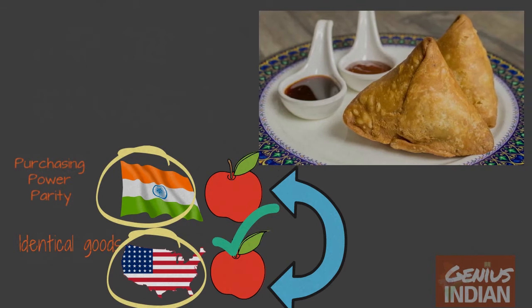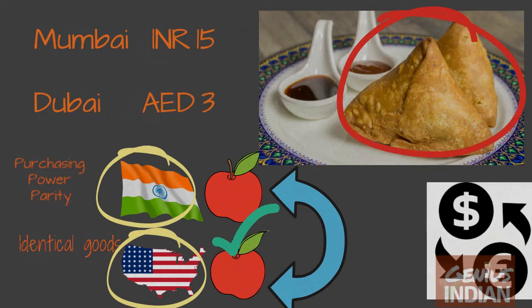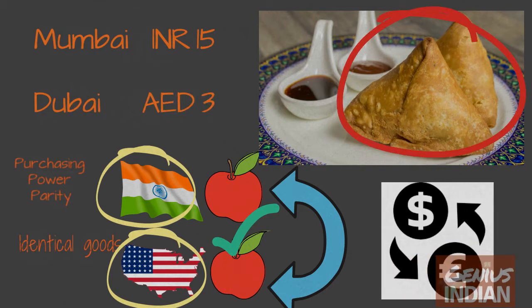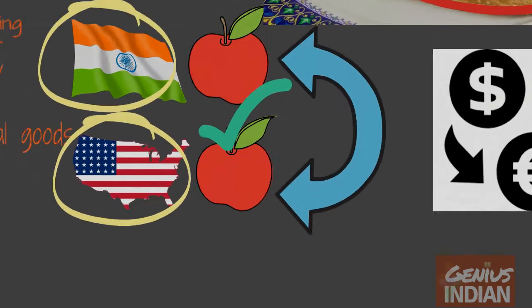If a samosa costs 15 rupees in India and 3 dirhams in UAE, then these two different prices of the same samosa provide us with the Purchasing Power Parity among these two countries and they provide us with a totally different relative value of these two currencies.